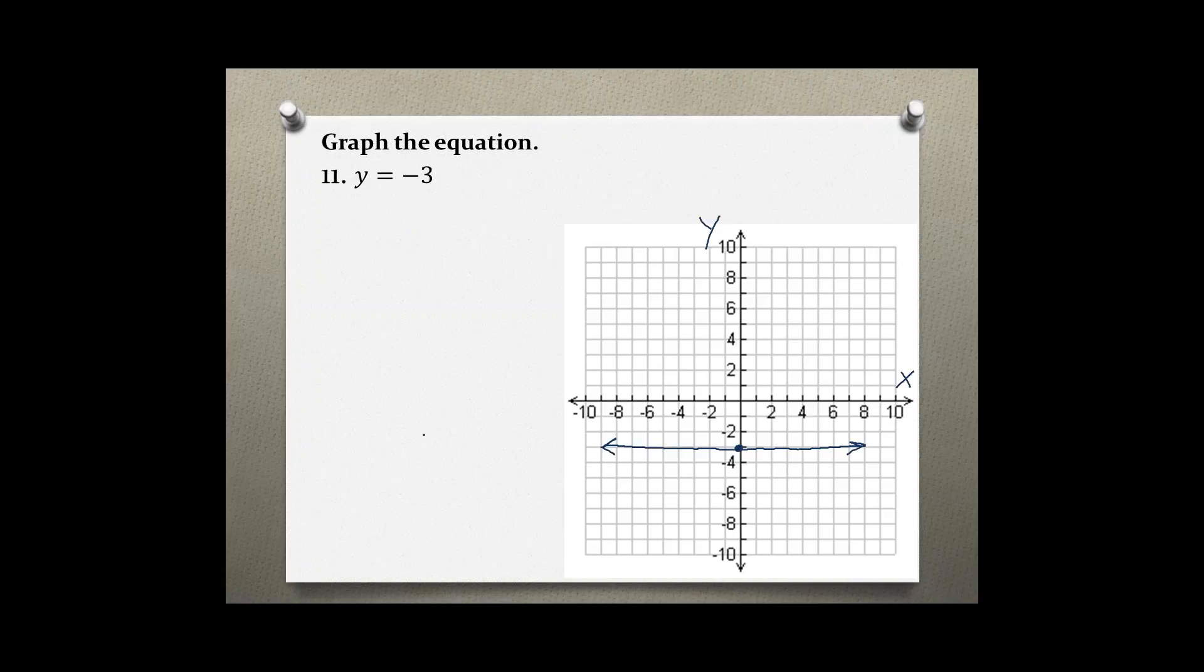Another way of figuring out how to graph this equation is by making a table and picking two x and y values. Because y equals negative 3, our y value is already given for those two points—it must be negative 3. Our x value should be on this x-axis, so anything between negative 10 and 10. Let's pick 0 and 8.